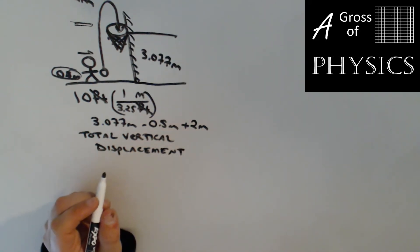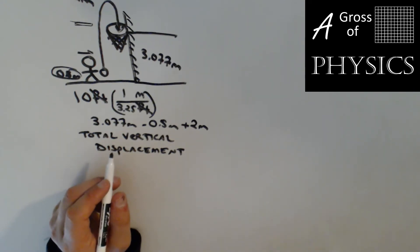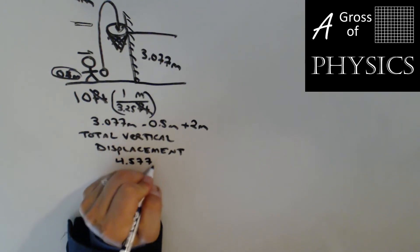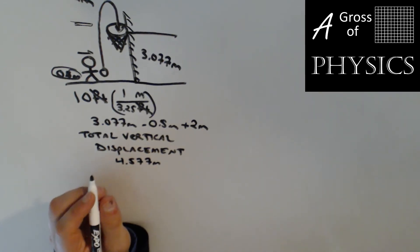I should be able to find the initial velocity from that number once I write my givens out. So if I take 3.077 minus 0.5 plus 2, the entire height is 4.577 meters. And that's what I'll use in my givens list.